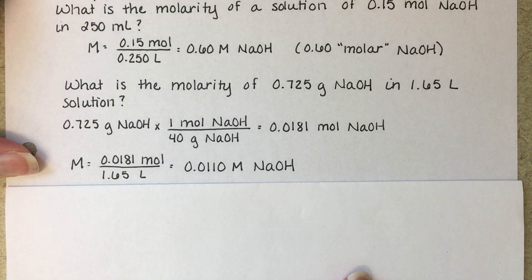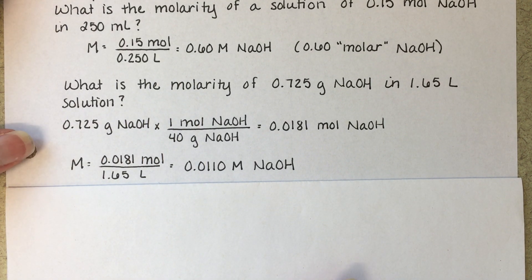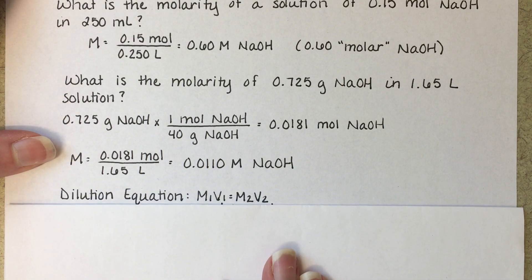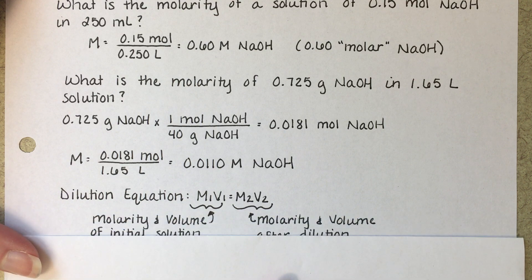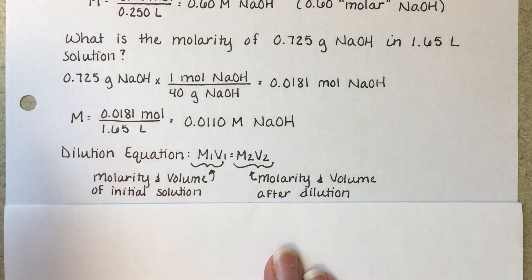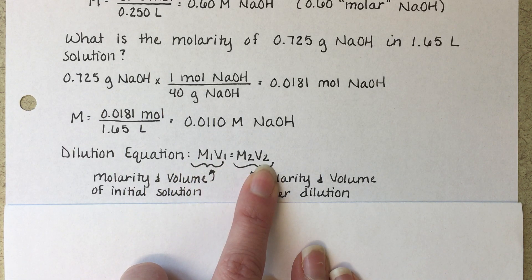Another thing that we need to be able to do as chemists is figure out what the concentration of a solution is after it's been diluted. We do quite a bit of dilution. So the equation that we use to calculate molarity after dilution is M1V1 equals M2V2.